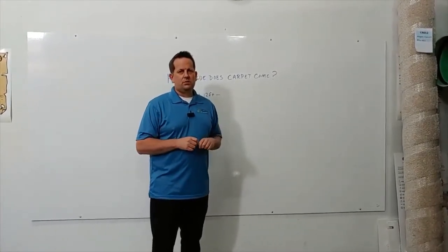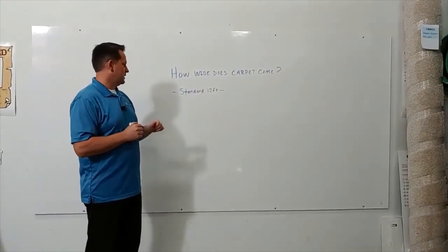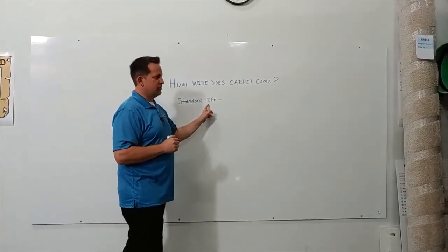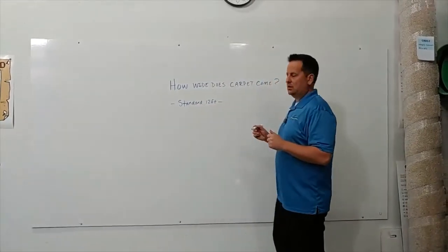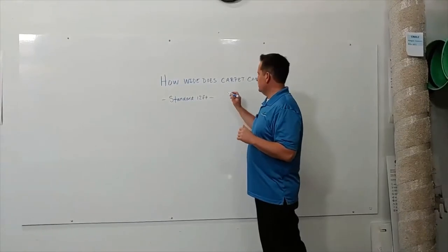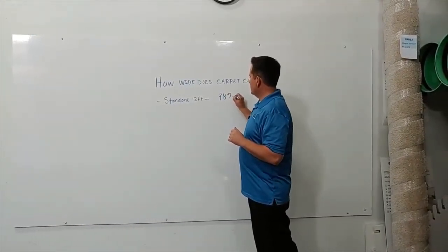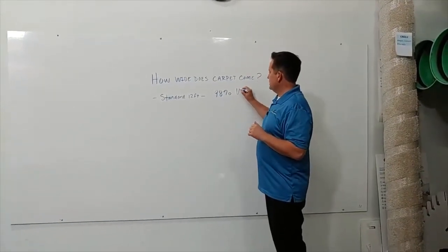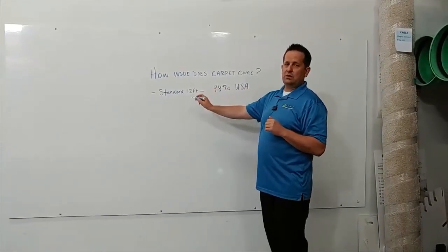If you look here, how wide does carpet come? With carpet, the standard roll size is 12 feet wide. From my experience doing this my whole life, I would say probably close to 98% of carpet made in the USA comes in 12 foot wide.